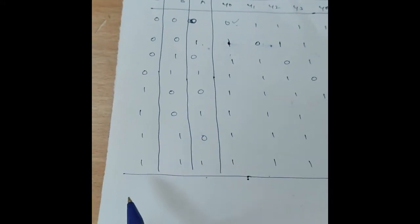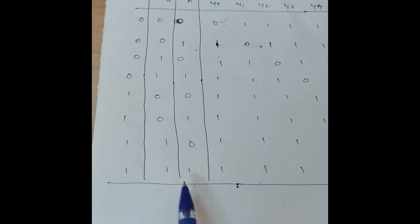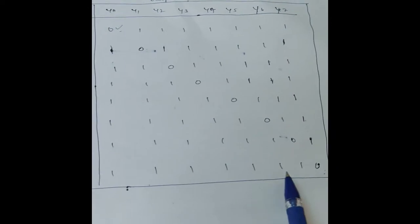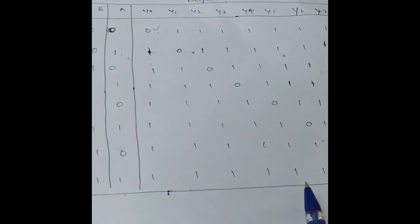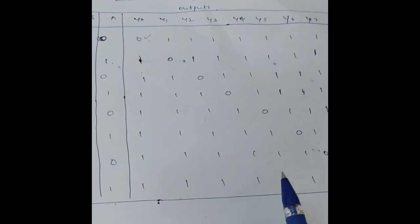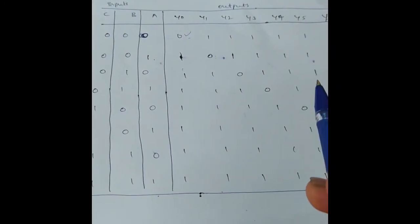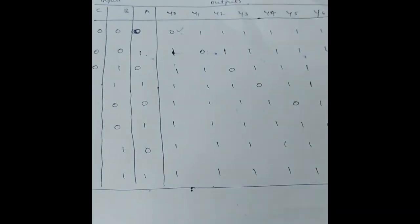For the last combination 1, 1, 1, Y7 is activated — Y7 is 0, and remaining all are 1s. This is an active-low output decoder, meaning the selected output is 0 and all others remain 1.